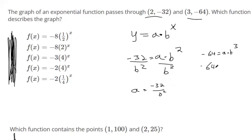So negative 64 equals negative 32 over b squared times b to the third. Right, and so this b to the third, it's in the numerator. You could rewrite it up here because they're multiplying. And b to the third divided by b to the second just gives you b. So to finish getting b by itself, divide negative 32 from both sides. So we get b equals 2.